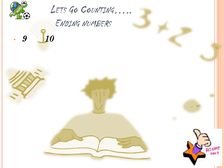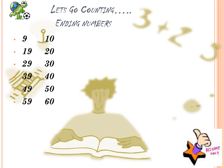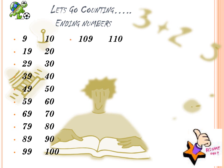After 9 we have 10. Then when we have 19 it's followed by 20, 29, 30, 39, 40, 49, 50, 59, 60, 69, 70, 79, 80, 89, 90, 99, 100. Then 109, 110.